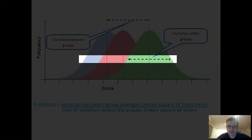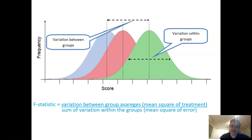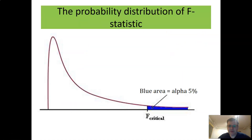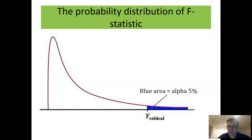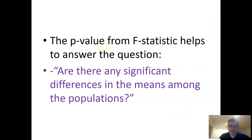By setting the variation between averages relative to the variation within groups, we get the F-statistic, which follows an F-distribution. The decision rule works as follows: we compare the p-value to the rejection region. With an alpha of five percent, if the p-value is less than that five percent area, or equivalently if the F-statistic is larger than the F-critical cutoff point for the five percent significance level, we reject the null hypothesis.